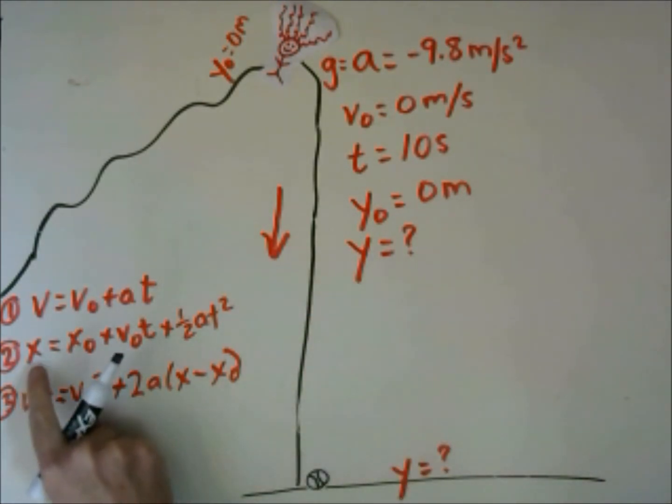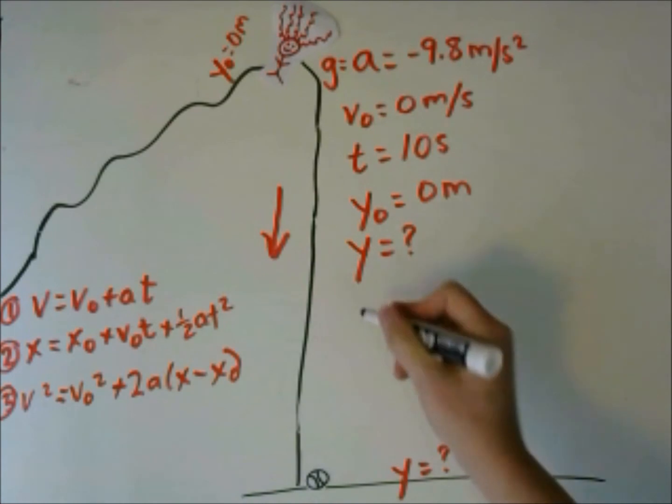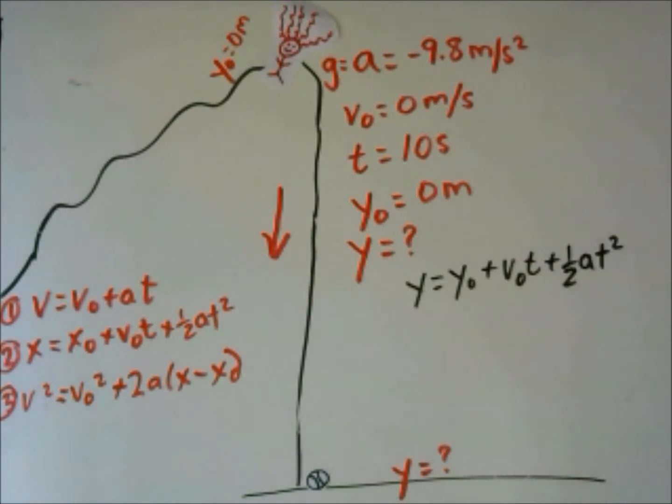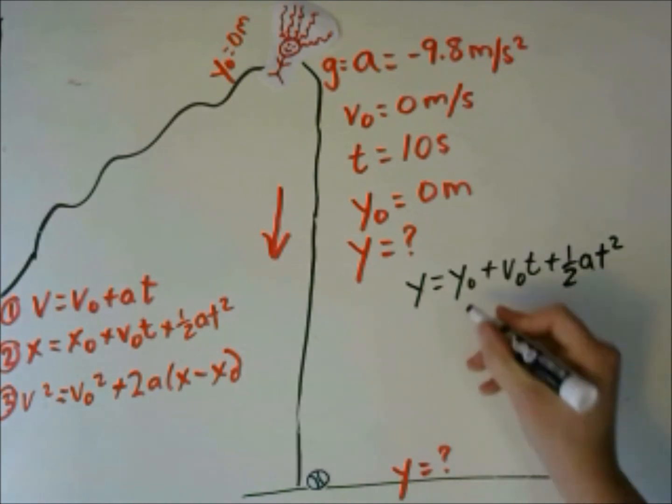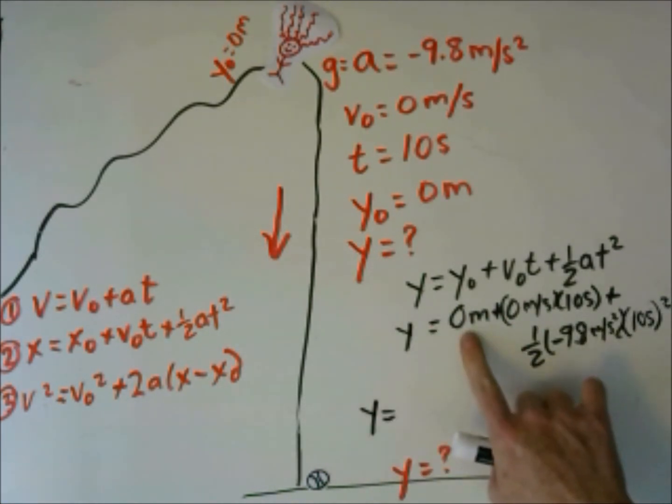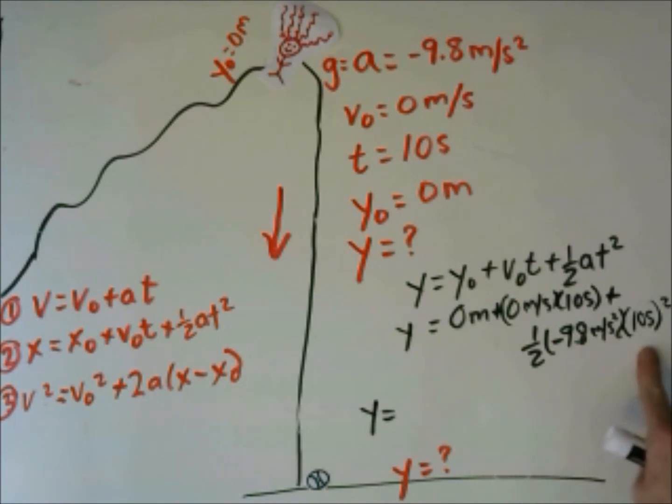In this case, we are going to replace the x's with y's because we are going in the y direction. Write your equation and plug in what you know. Don't forget to make your acceleration negative. This is 0. 0 times 10 will give us 0, so this will be the only part that we will include in our final answer.